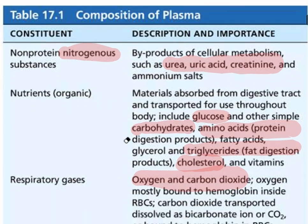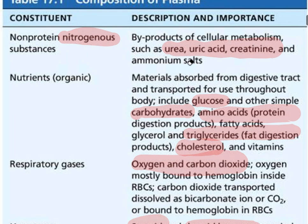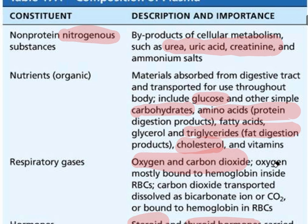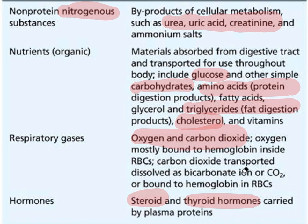Examples of nitrogen-containing molecules in plasma include urea, uric acid, and creatinine. Creatinine is a waste product from muscle metabolism. Nutrients are small molecules used as fuel for cells, such as carbohydrates like glucose, amino acids as building blocks for proteins, triglycerides, cholesterol, and vitamins. The last two categories are respiratory gases like oxygen and carbon dioxide, and hormones like steroid and thyroid hormones.